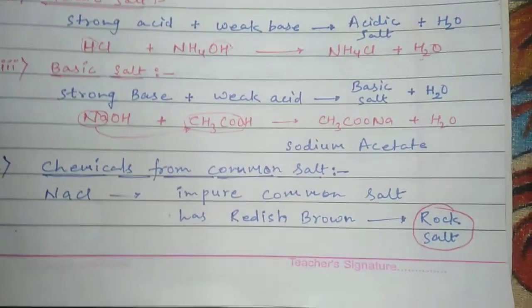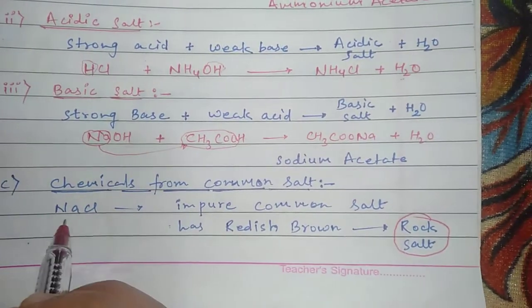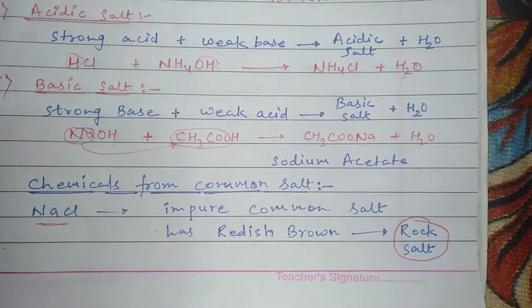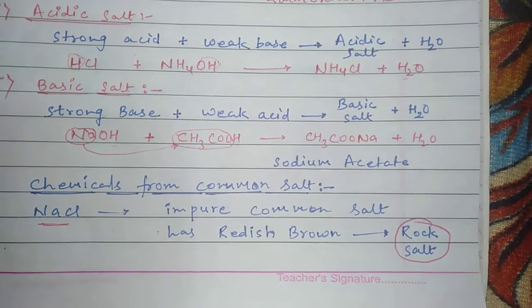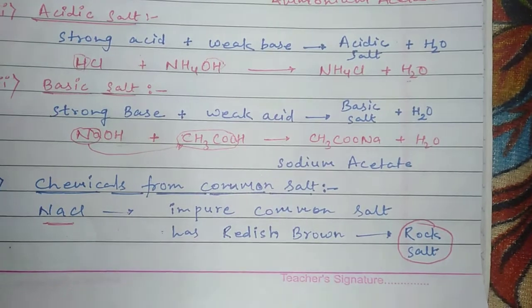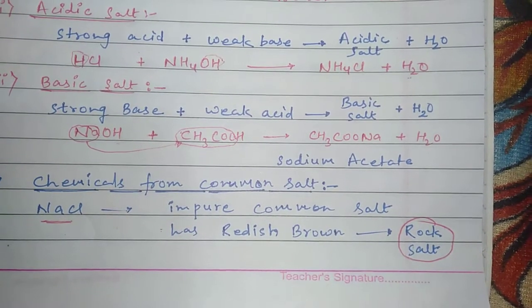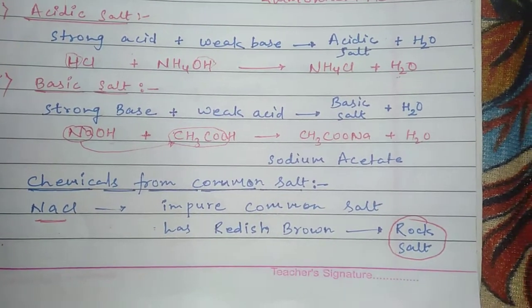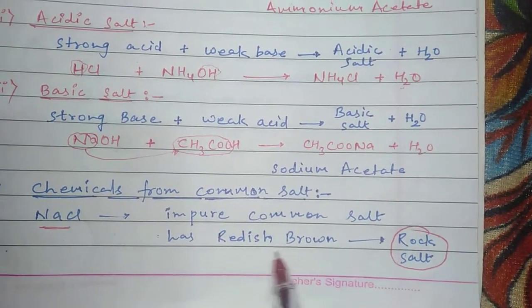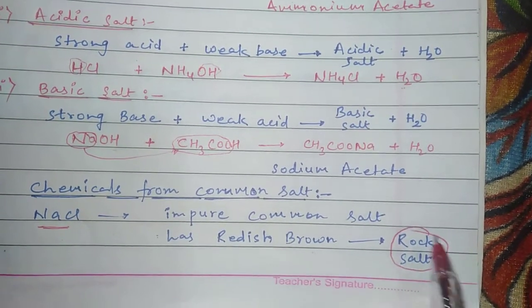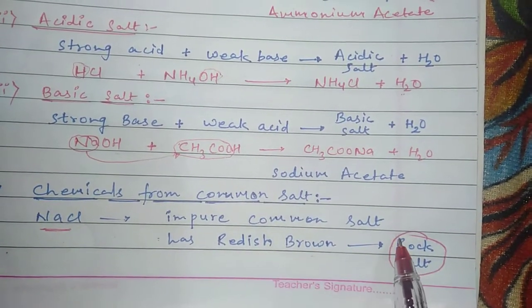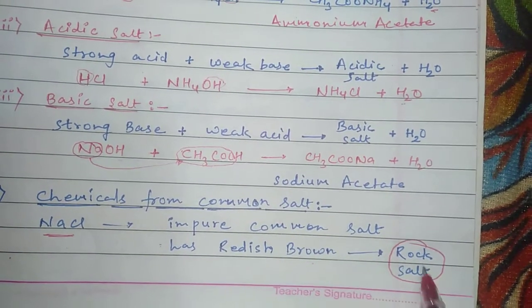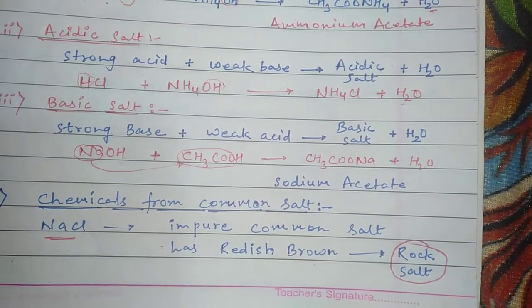Now we will talk about chemicals from salt. The common salt is initially white, but whenever impurity is present in common salt, we find a color — that color is red or brown. That impure salt is known as rock salt. So impure common salt is known as rock salt.